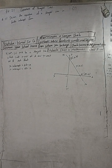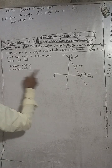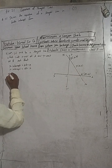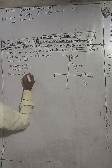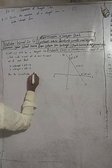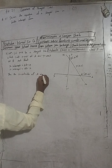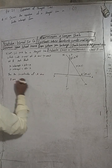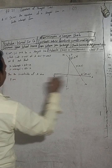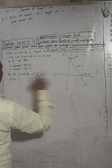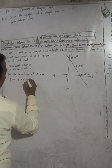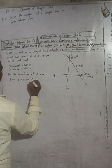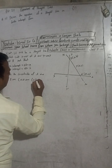Now we have written OB. The coordinates of A and B will be: the coordinate of A is (a, 0) and the coordinate of B is (0, b) respectively.